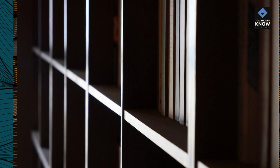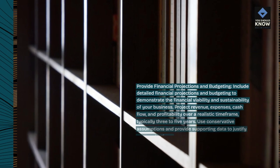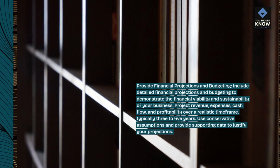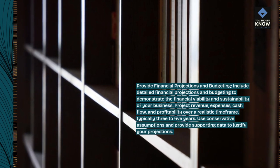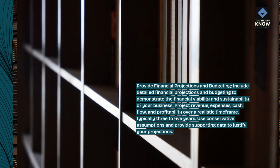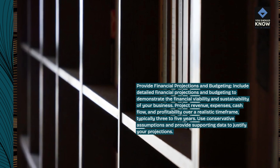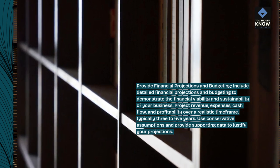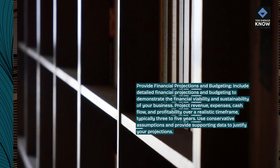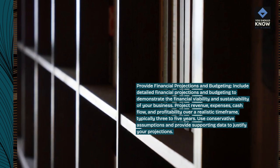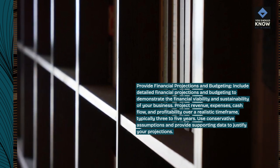Provide financial projections and budgeting. Include detailed financial projections and budgeting to demonstrate the financial viability and sustainability of your business. Project revenue, expenses, cash flow, and profitability over a realistic time frame, typically three to five years. Use conservative assumptions and provide supporting data to justify your projections.